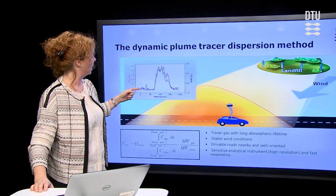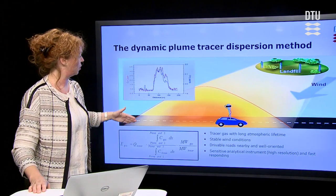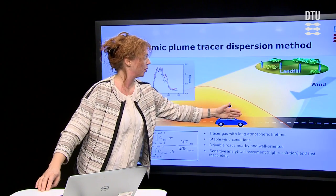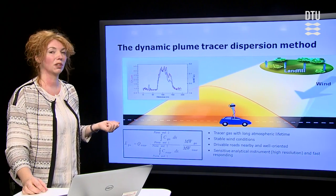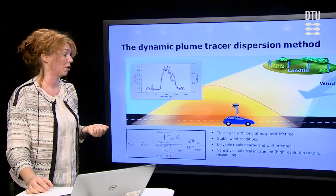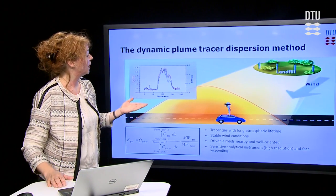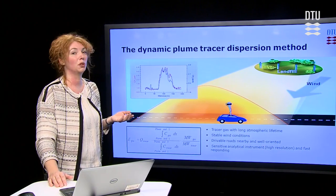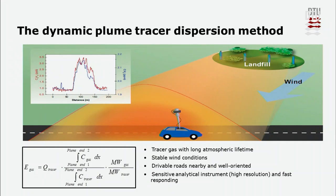And this is what you see here — this is a plume. It's the plume concentrations that you obtain when you traverse the plume downwind. And based on this ratio, you can quite accurately calculate the methane emission from your site. What is important for this method is that you can manage to simulate your emission source correctly with the tracer release gas bottles that you place on the source.